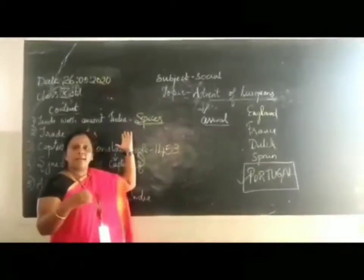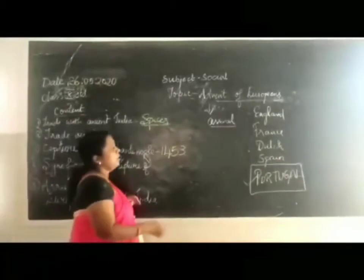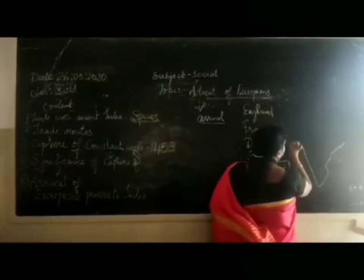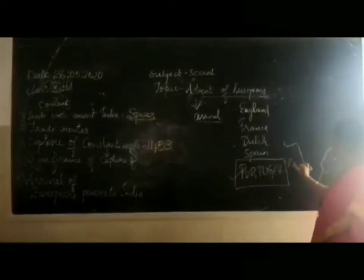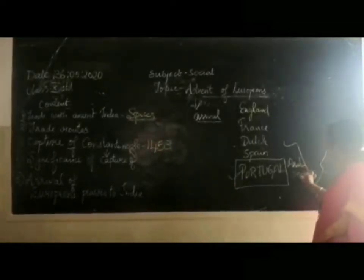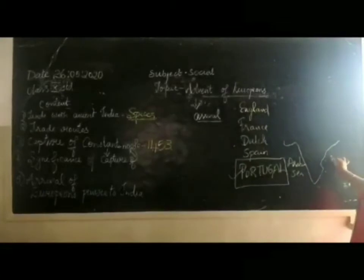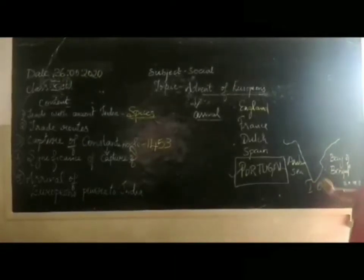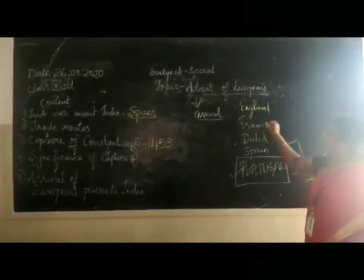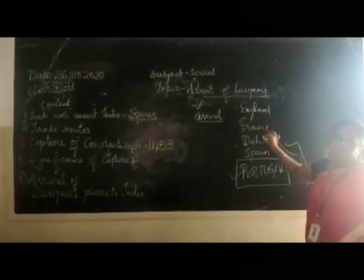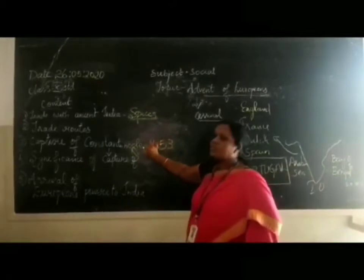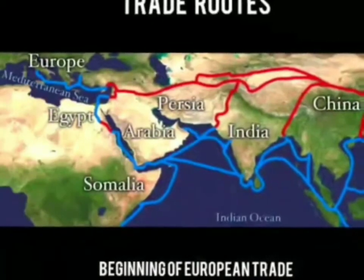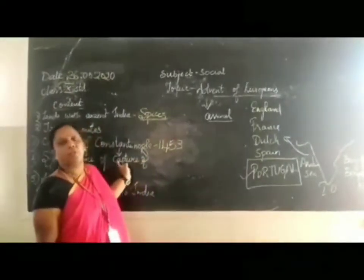Now, coming back to the trade routes. If you draw the Indian subcontinent, you have the Bay of Bengal on one side. There was a place called Constantinople — also a city — which was a very busy trading center, currently called Istanbul. Constantinople was a very busy trading hub for the Europeans.